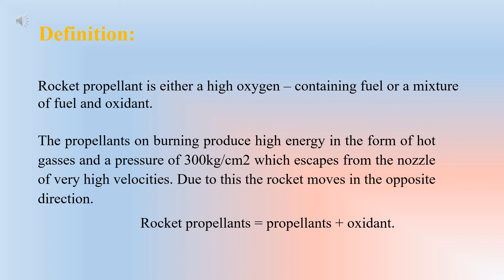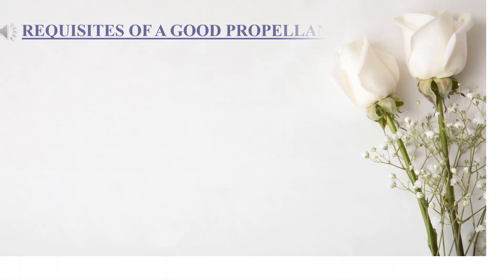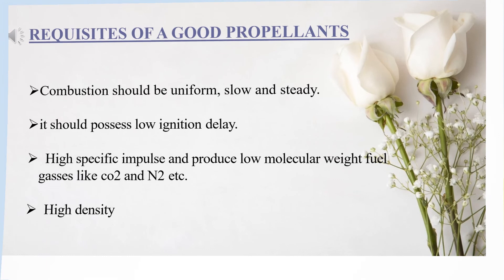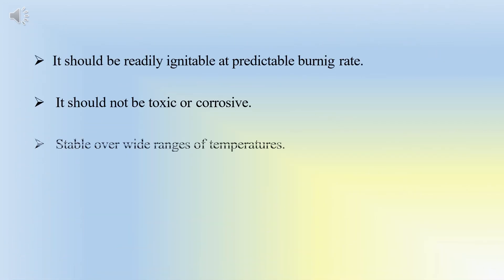Rocket propellant definition: rocket propellant is either a high oxygen-containing fuel or a mixture of fuel and oxidant. The propellants on burning produce high energy in the form of hot gases and a pressure of 300 kg/cm² which escapes from the nozzle at very high velocities. Due to this the rocket moves in the opposite direction. Requisites of a good propellant: combustion should be uniform, slow and steady. It should possess low ignition delay, have high density, high specific impulse and produce low molecular weight fuel gases like CO2 and N2. It should not be toxic or corrosive, and should be stable over wide ranges of temperatures and be non-hygroscopic.